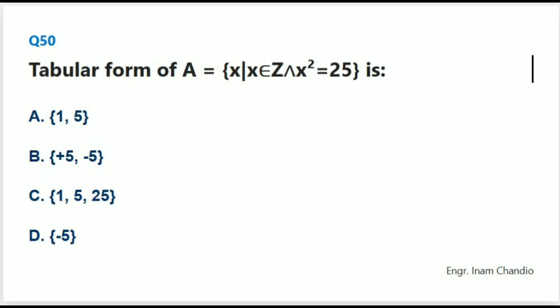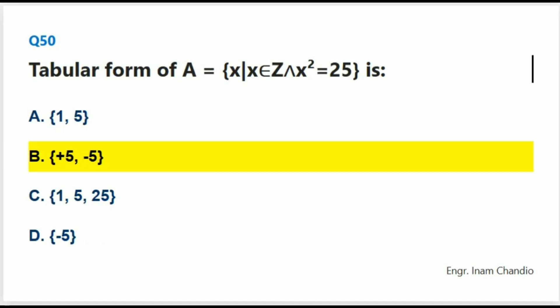Tabular form of A = {x | x ∈ E, x² = 25} is: The correct answer is B. {+5, -5}.